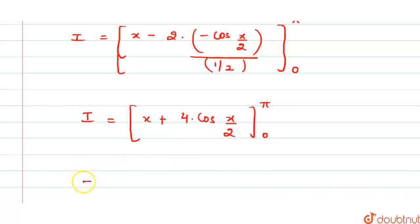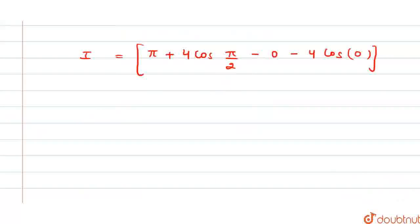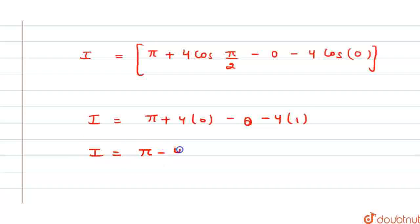If we apply the limits, this will be π + 4 cos(π/2) - 0 - 4 cos(0). We know that cos(π/2) = 0. So this will be I = π + 4·0 - 0, and cos(0) = 1, so - 4·1. This gives I = π - 4.